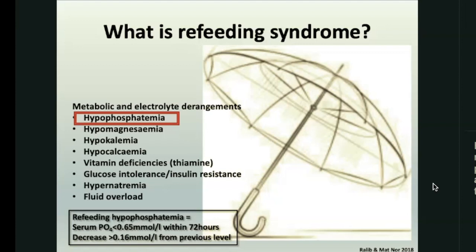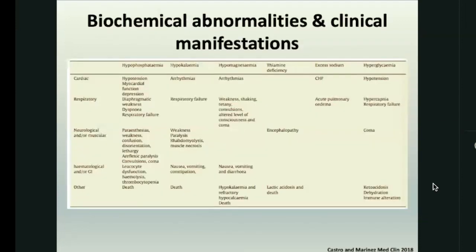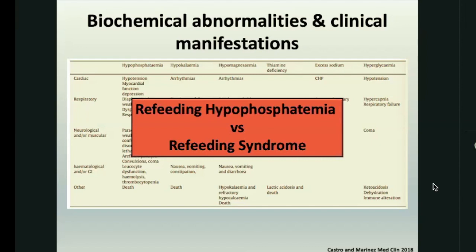Looking at the definition for refeeding hyperphosphatemia — the most well-accepted one is a serum phosphate level that drops to below 0.65 mmol/L within 72 hours of instituting dextrose or glucose therapy through any route, or a decrease of more than 0.16 mmol/L from any previous level. So if a patient had a phosphate of 1.5 and starts feeds and it's 0.9 tomorrow — although still within normal range — that is a worrying shift in a patient at risk of refeeding syndrome, and that's enough to institute a refeeding protocol. It's important to remember that refeeding hyperphosphatemia is not the same as refeeding syndrome. The syndrome involves lactic acidosis, fluid overload, high sodium, and insulin resistance — whereas refeeding hyperphosphatemia is something we can observe and then adjust the nutrition plan to prevent pushing the patient into full refeeding syndrome.